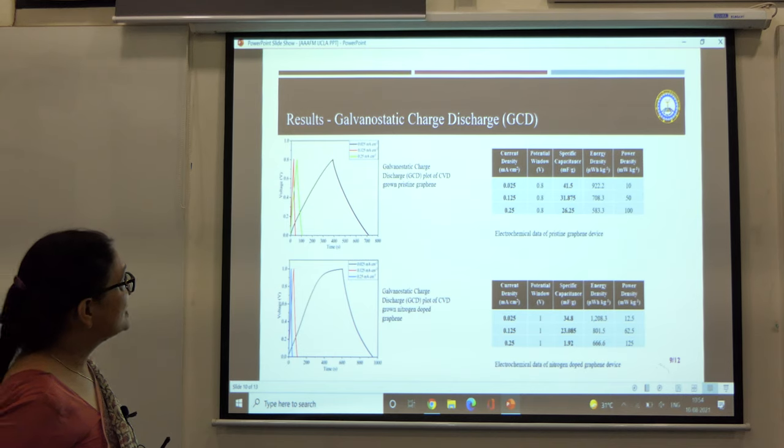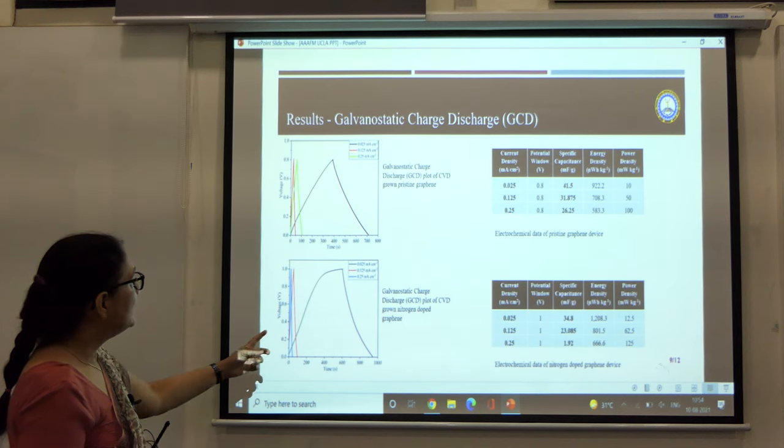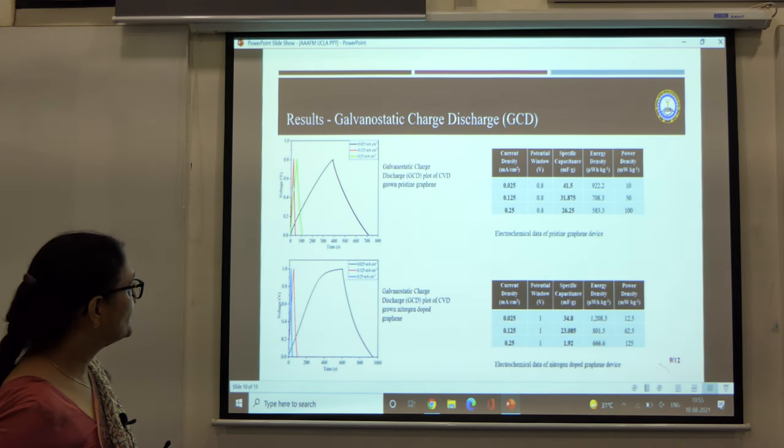These are the galvanostatic charge discharge curves of the two samples. The upper one shows for the pristine graphene and the lower one for the nitrogen doped graphene.